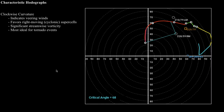Let's start off with something especially interesting: where you have a nice clockwise curvature in the hodograph. As you trace this hodograph out you get a clockwise curvature, and this indicates that you've got veering winds present in the atmosphere.